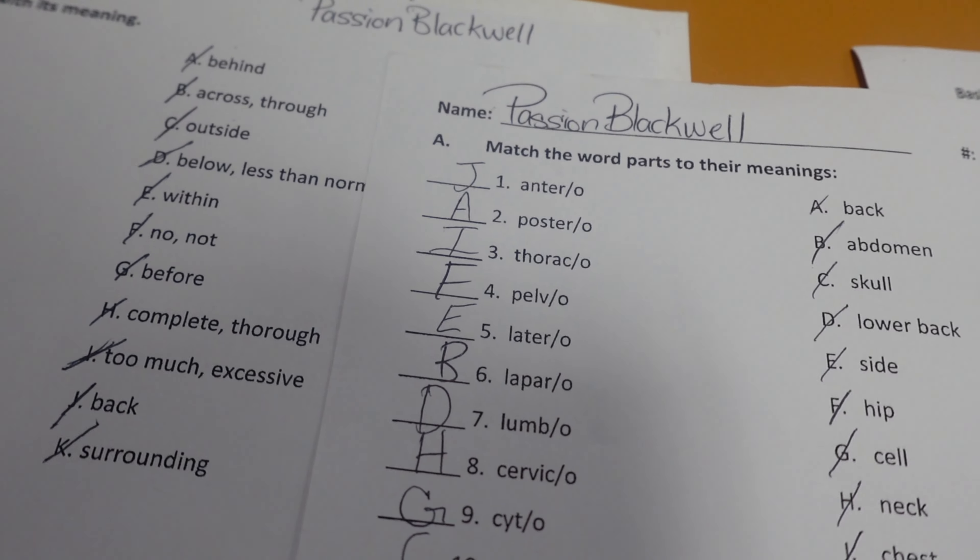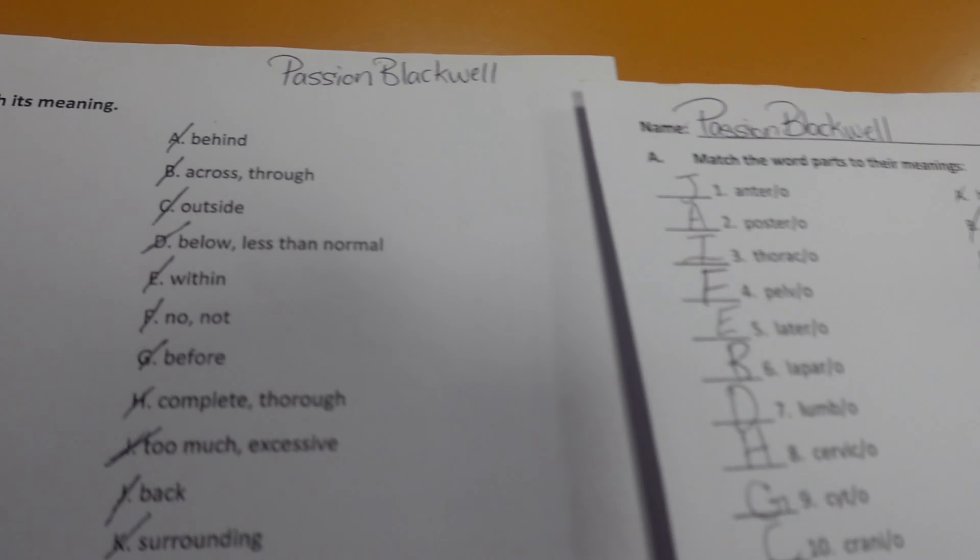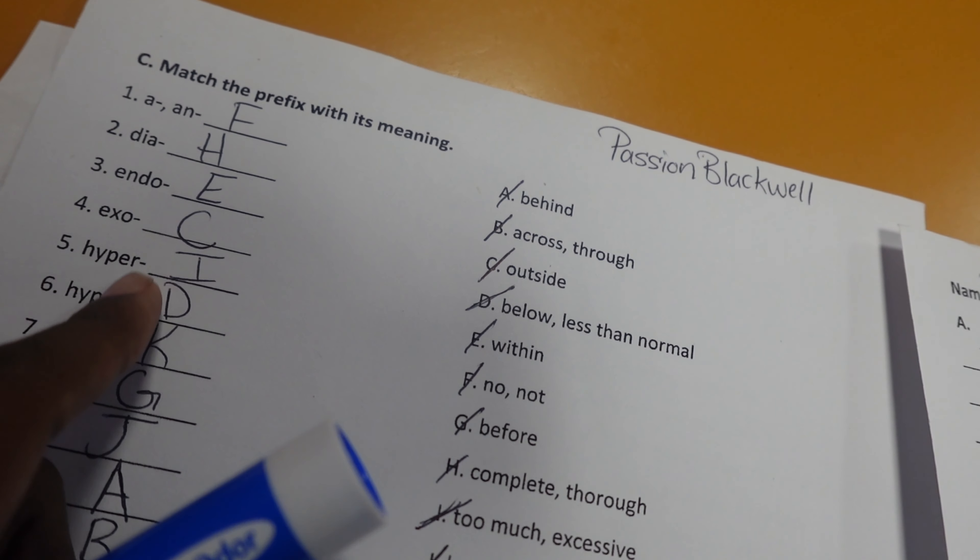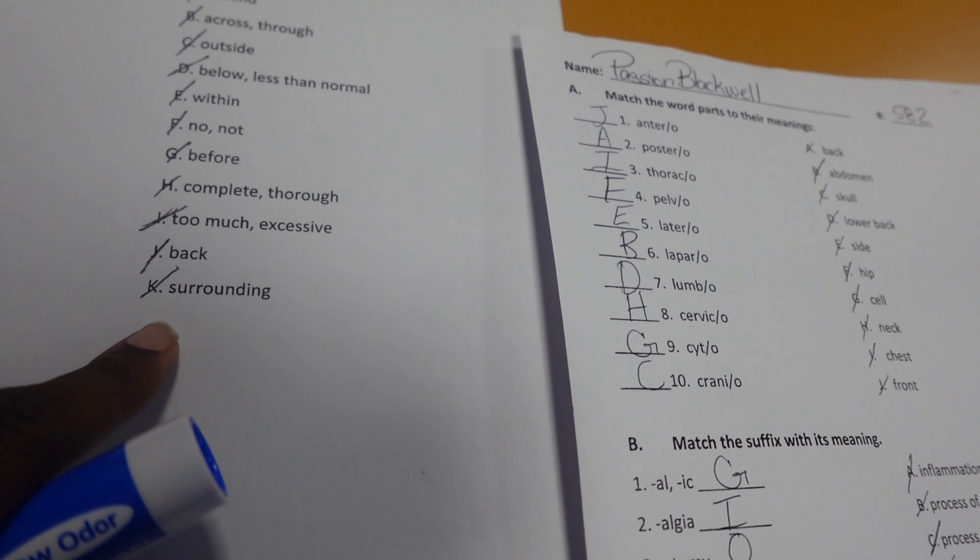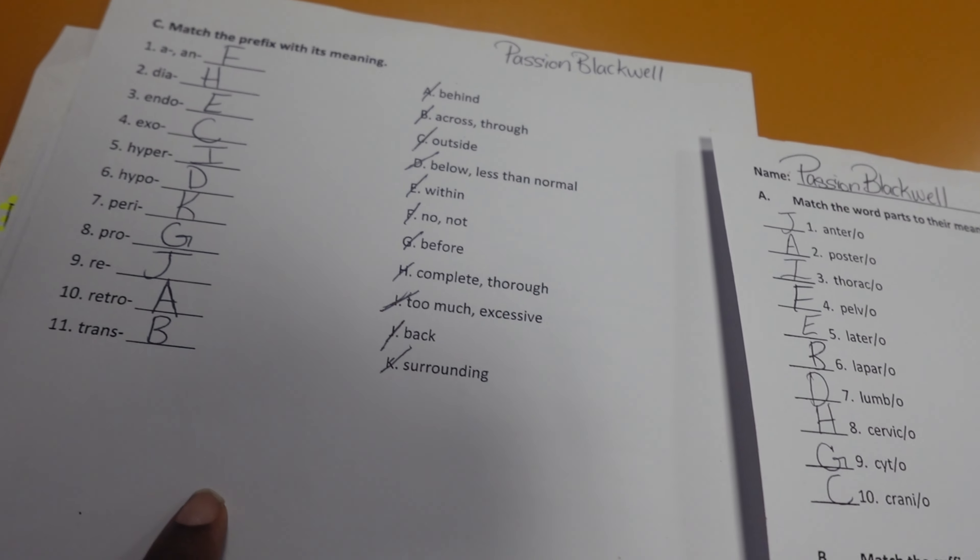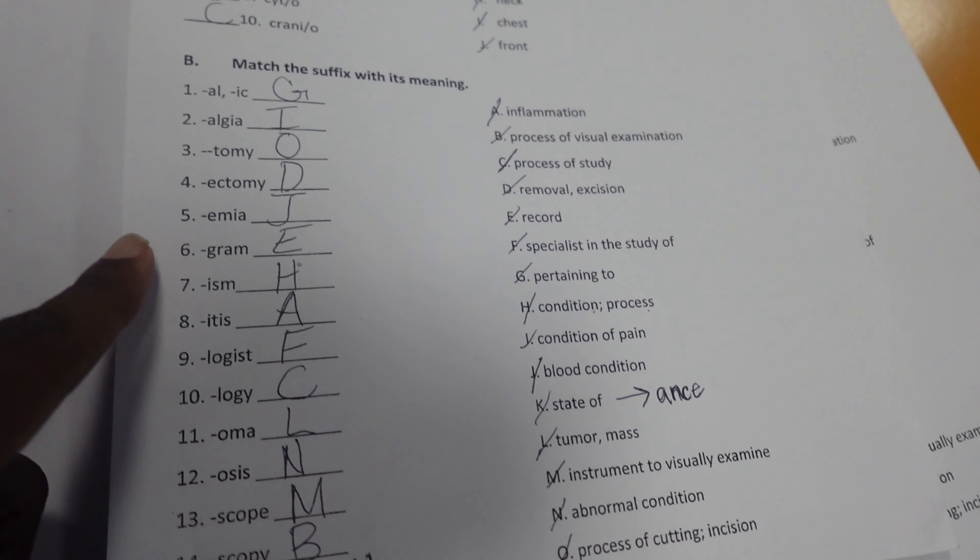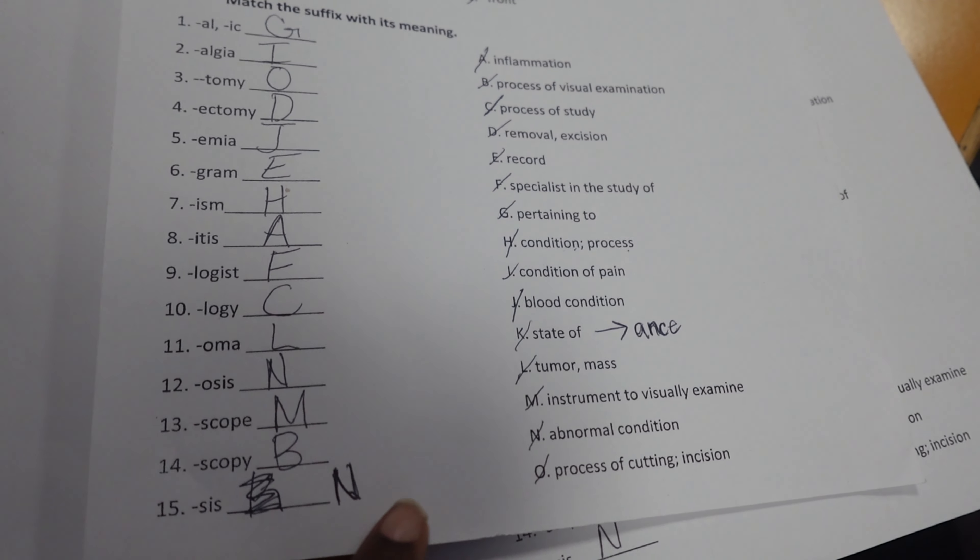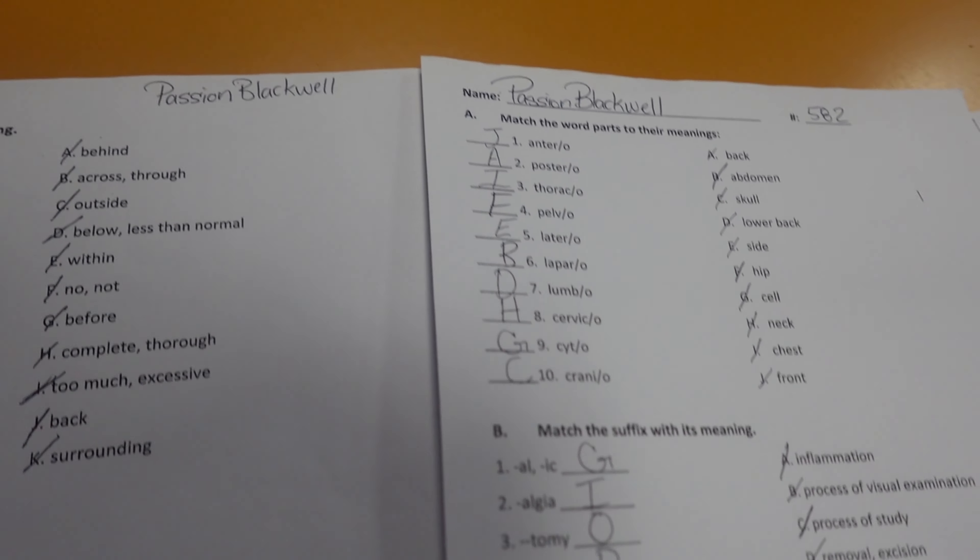So next I'm going to work on the prefixes and suffixes. I have the answer sheets, but what I'm going to do is write each prefix down and try to guess the meaning on the whiteboard. Then I'm going to check my answers and whatever answers I get wrong, I know I just need to work on those. I'm going to write them down and match them to the meaning. So let's get started.